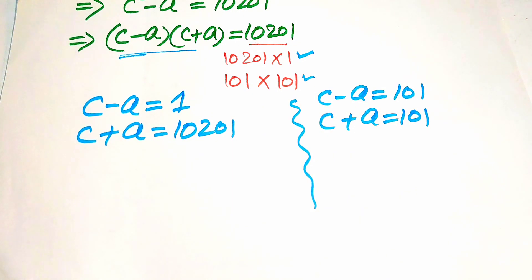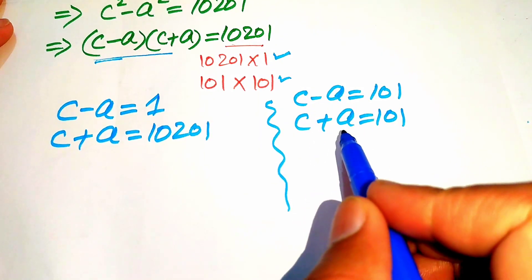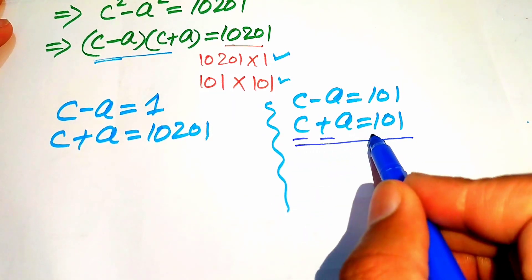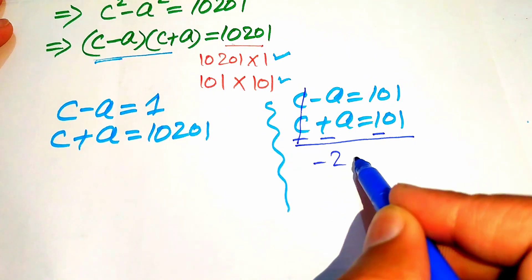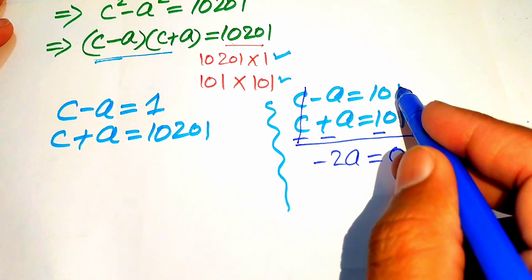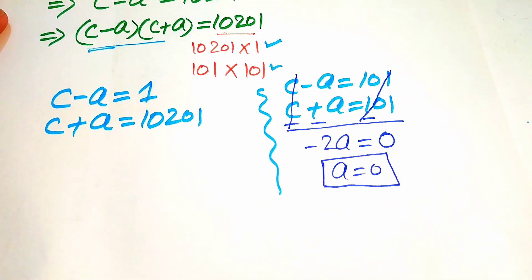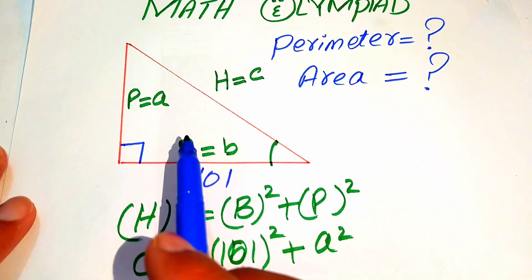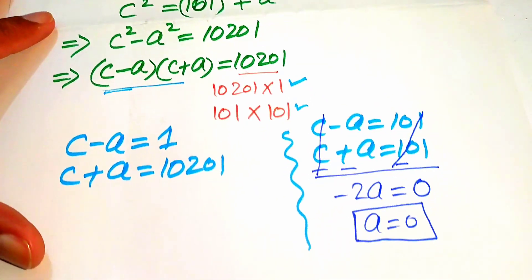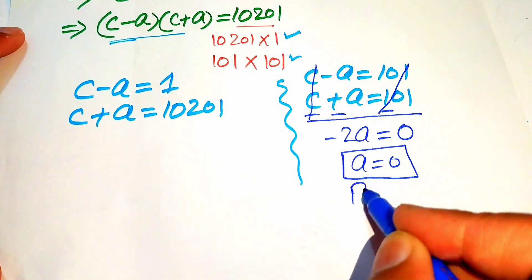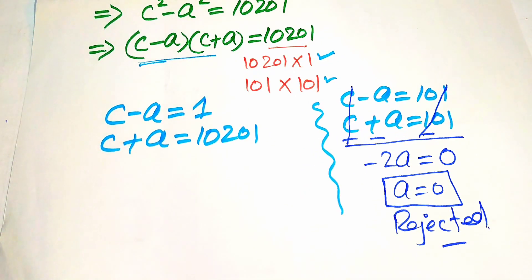Now we solve these two cases, focusing first on case number two. We subtract these two equations — the positive and negative terms cancel, and we get minus 2a equals zero, so a equals zero. Since a represents the perpendicular of this right triangle, if the perpendicular is zero then the triangle degenerates to zero. No side length of a triangle can equal zero, so we reject this case.